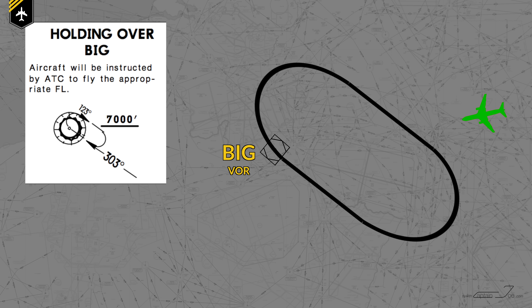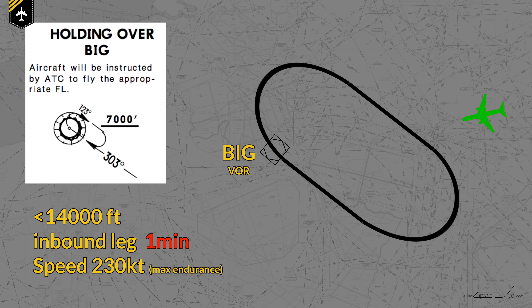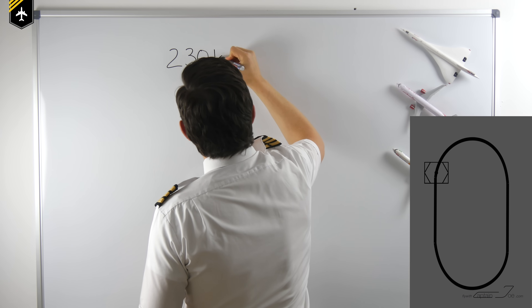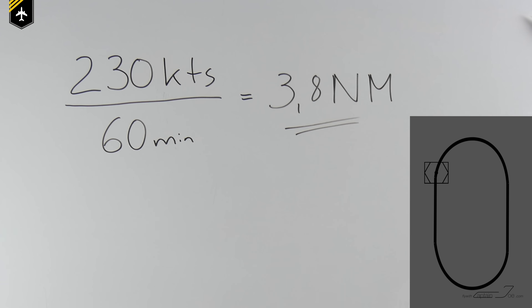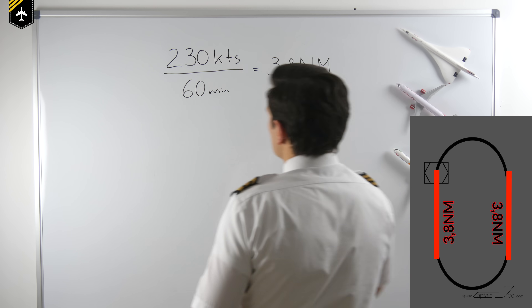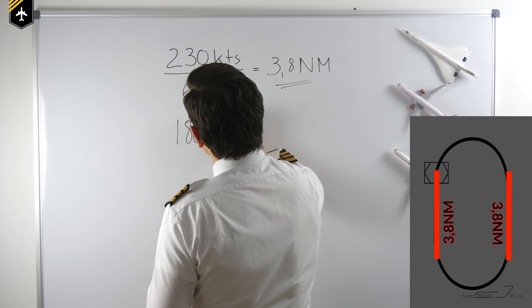Let's say there's no wind and you're at flight level 100 proceeding inbound to Biggin Hill VOR. As we are below 14,000 feet, regulations state the inbound leg shall be 1 minute long with a holding speed of 230 knots. Reading off the chart, the inbound course is 303 and the reciprocal outbound course — 180 degrees in the other direction — is 123. As we have no wind, both inbound and outbound legs are 1 minute long.